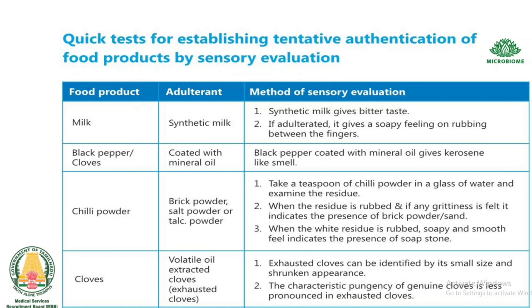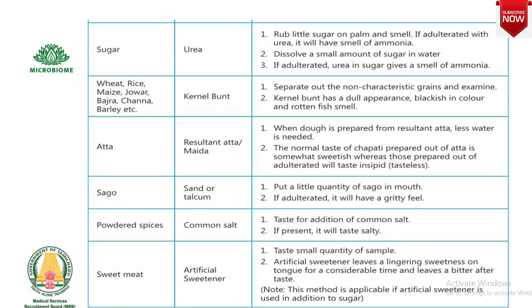For cloves: exhausted cloves can be identified by their small size and shrunken appearance; the characteristic pungency is less pronounced compared to genuine cloves. For sugar adulterated with urea: rub a little sugar on the palm and smell — if adulterated with urea, it will have a smell of ammonia. Dissolving a small amount of sugar in water also gives a smell of ammonia if urea is present.